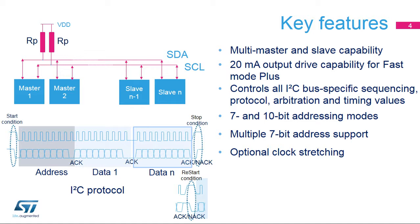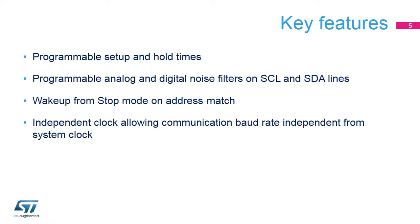The peripheral controls all I2C bus-specific sequencing, protocol, arbitration, and timing values. 7- and 10-bit addressing modes are supported, and multiple 7-bit addresses can be supported in the same application. The peripheral in master mode supports slave clock stretching and clock stretching from the slave side. In slave mode, the clock stretching can be disabled by software. The setup and hold times are programmable by software. Analog and digital glitch filters on the data and clock lines can be configured by software.